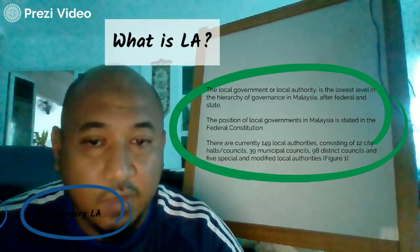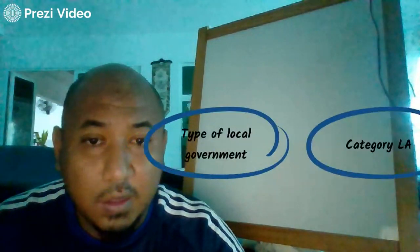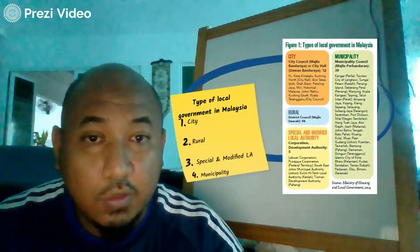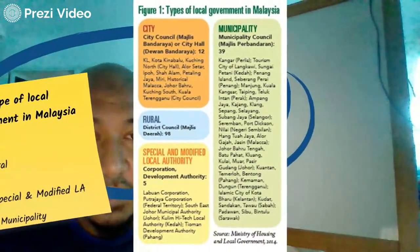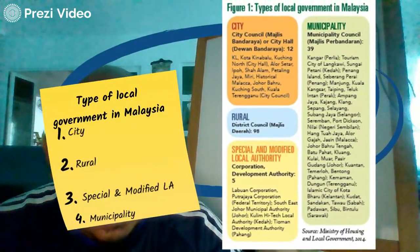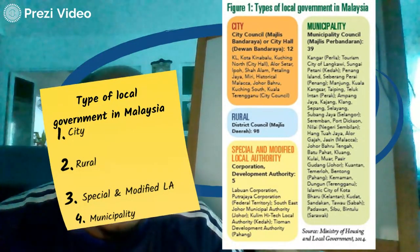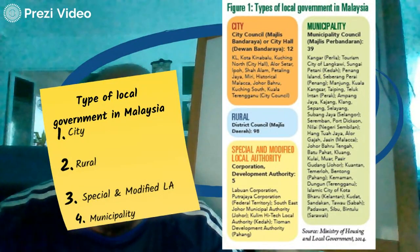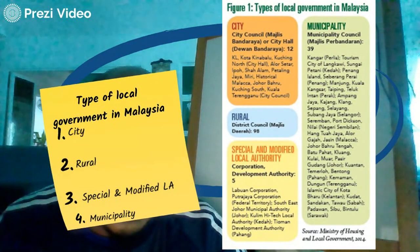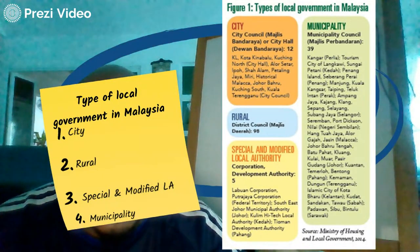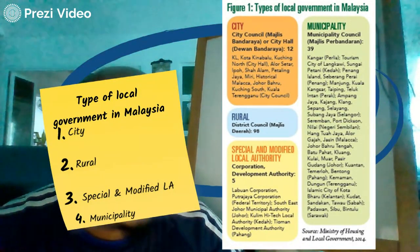In Figure 1, we can see the breakdown of local authorities in Malaysia — city, rural, special and modified local authorities, and municipal. For city (Majlis Bandaraya or City Hall/Dewan Bandaraya), there are 12, including major cities such as Kuala Lumpur, Kuching, Kota Kinabalu, Alor Setar, Shah Alam, Kota Kinabalu, Miri, and others. For rural, it is the district council (Majlis Daerah), such as Majlis Daerah Seri Iskandar.